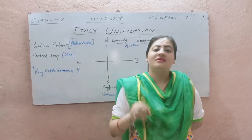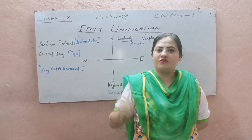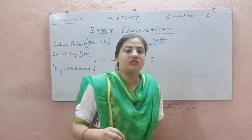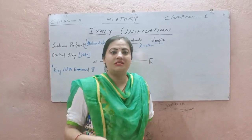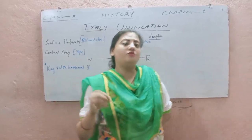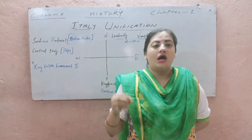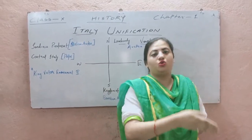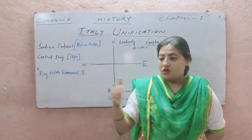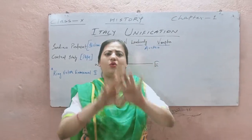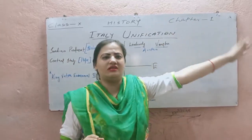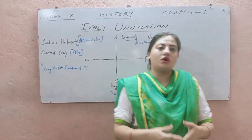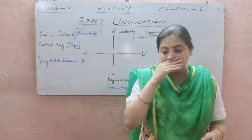Good morning, dear all. In our last classes of history we discussed about Germany unification — Chapter Number One: Nationalism in Europe. We have seen how Germany got unified from a multinational dynasty to a nation state. Now in today's class we have to talk about Italy unification.